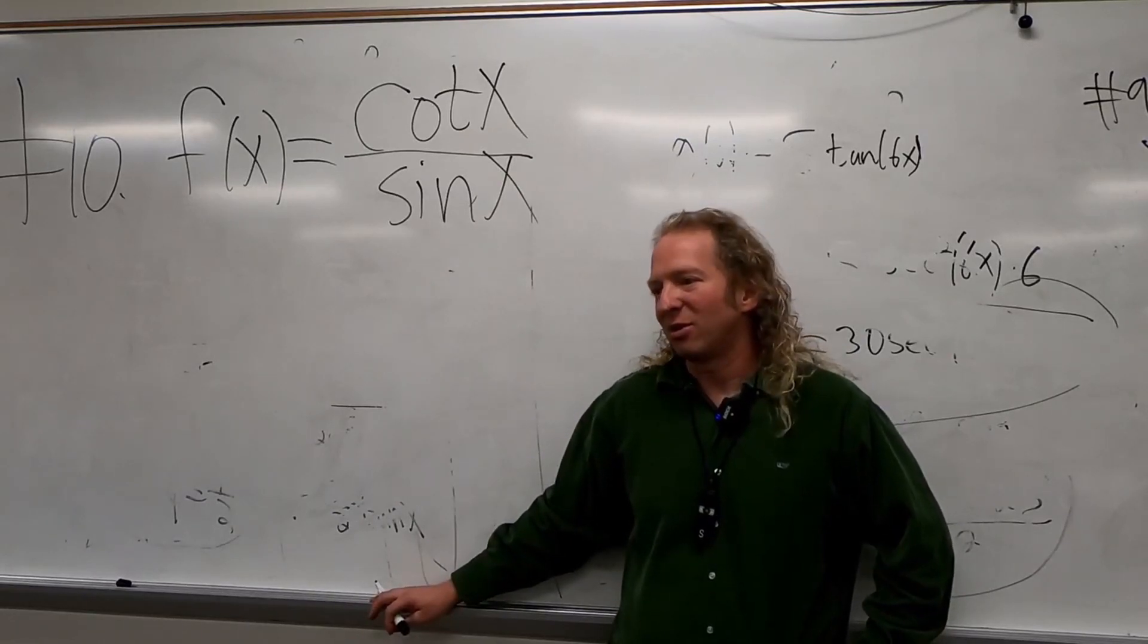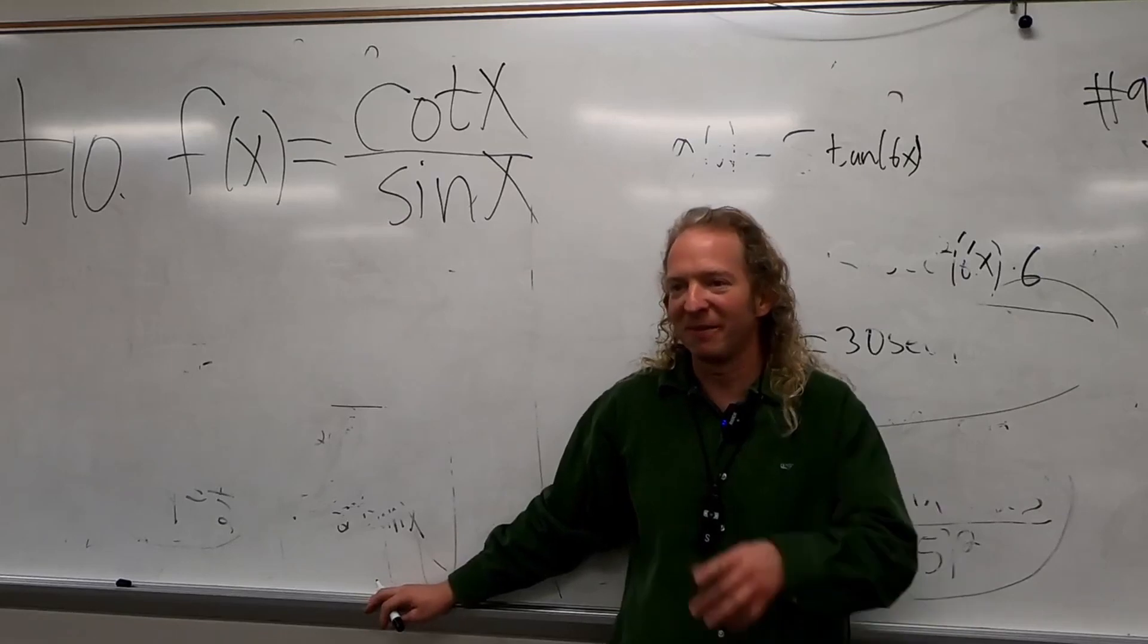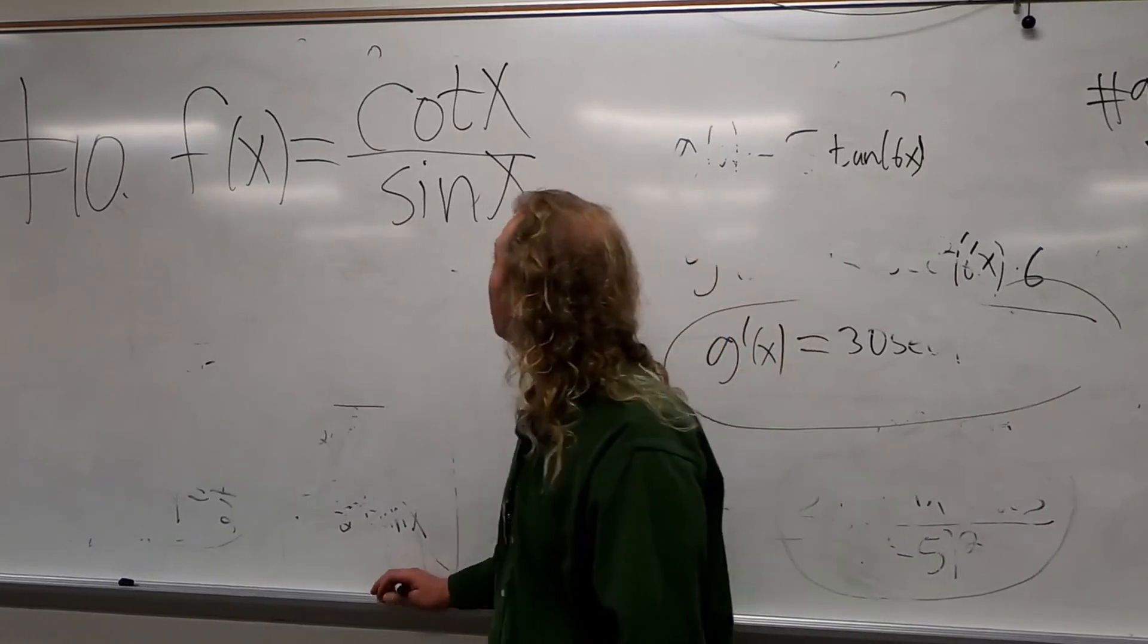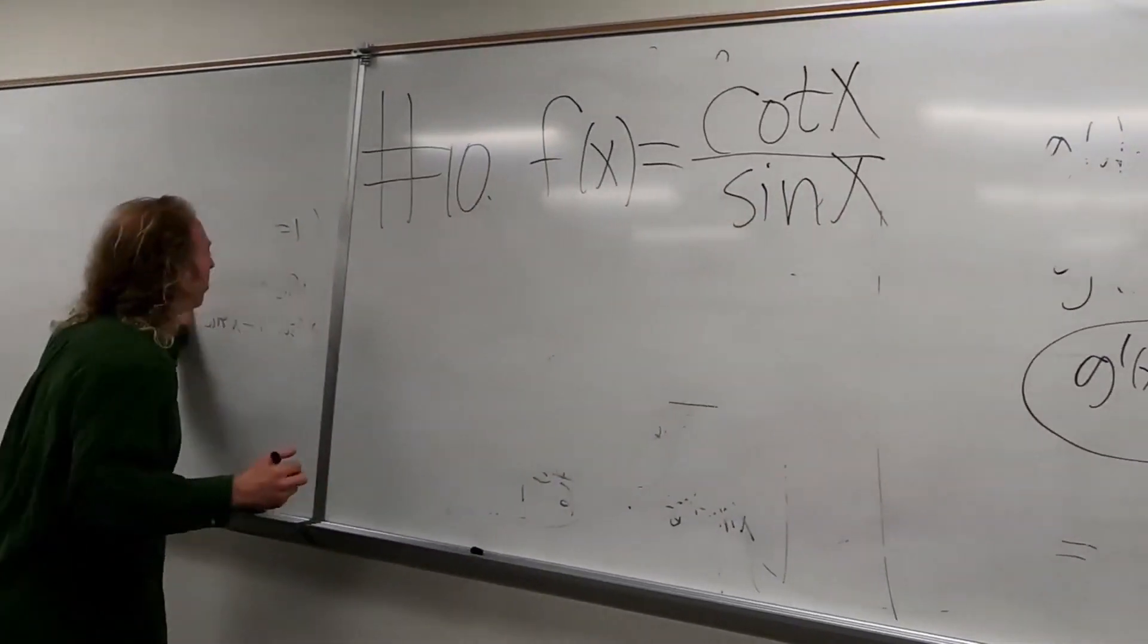So 1 minus cosine squared, that just makes it worse. Cotangent of x. The one that simplified to 1 over sine x, and that would just be cosine x?